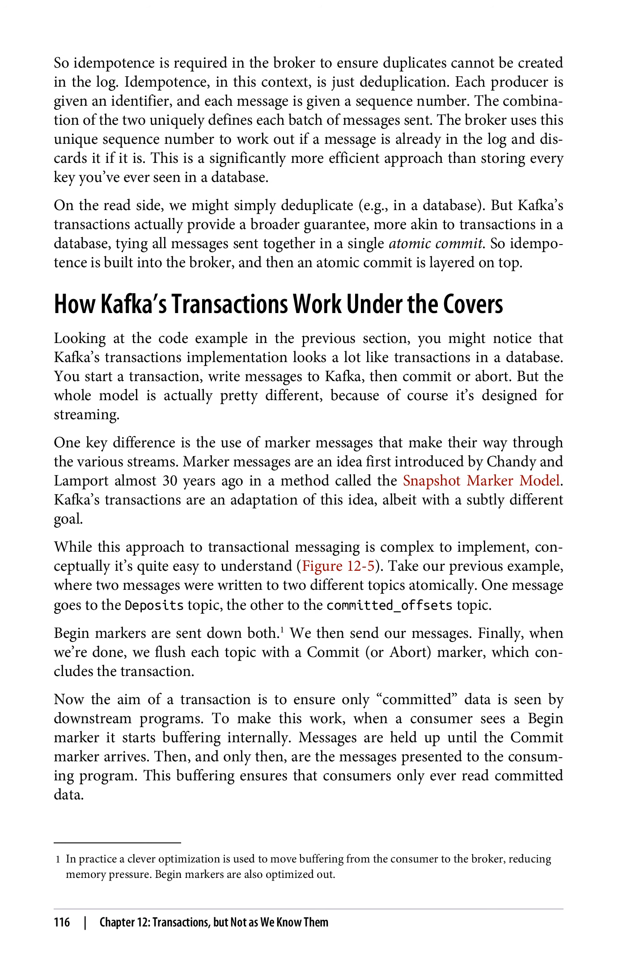How Kafka's transactions work under the covers: looking at the code example in the previous section, you might notice that Kafka's transactions implementation looks a lot like transactions in a database. You start a transaction, write messages to Kafka, then commit or abort. But the whole model is actually pretty different, because of course it's designed for streaming. One key difference is the use of marker messages that make their way through the various streams. Marker messages are an idea first introduced by Chandy and Lamport almost 30 years ago in a method called the snapshot marker model. Kafka's transactions are an adaptation of this idea, albeit with a subtly different goal. While this approach to transactional messaging is complex to implement, conceptually it's quite easy to understand (figure 12-5).